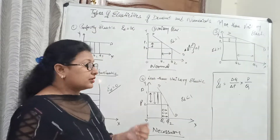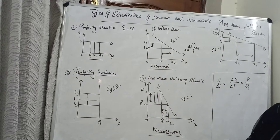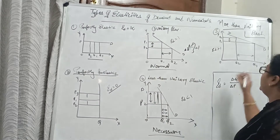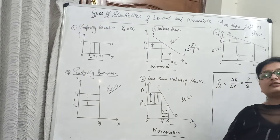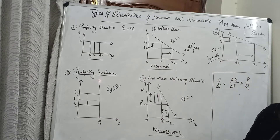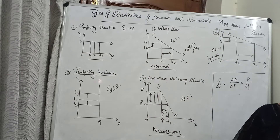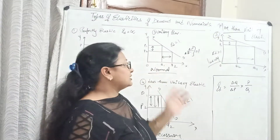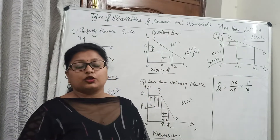The last case is more than unitary elastic. In more than unitary elastic demand, a small change in price leads to a proportionally large change in quantity demanded. The example is luxury goods — heavy investment goods like mobile phones, TVs, or refrigerators. These are things you don't necessarily need, so when price changes, your demand will shift quite frequently. This is the case of more than unitary elastic.